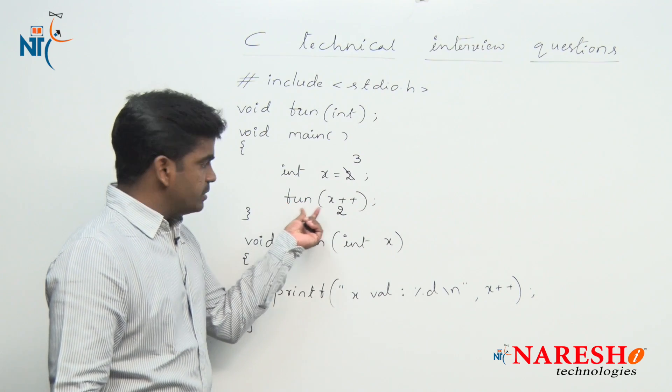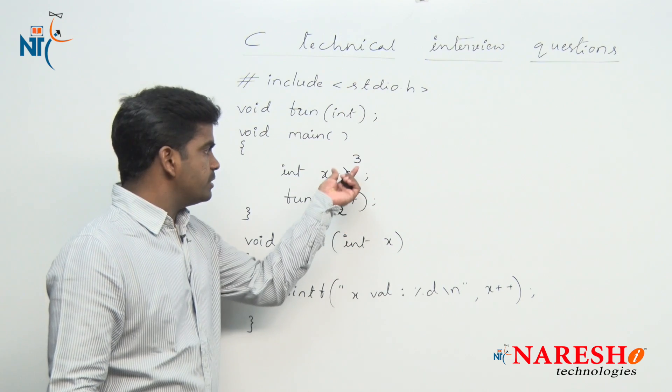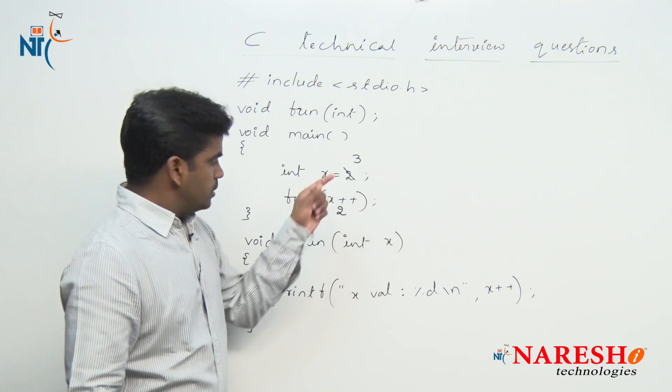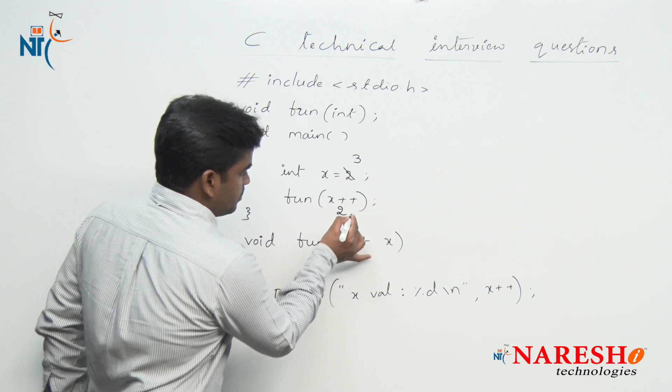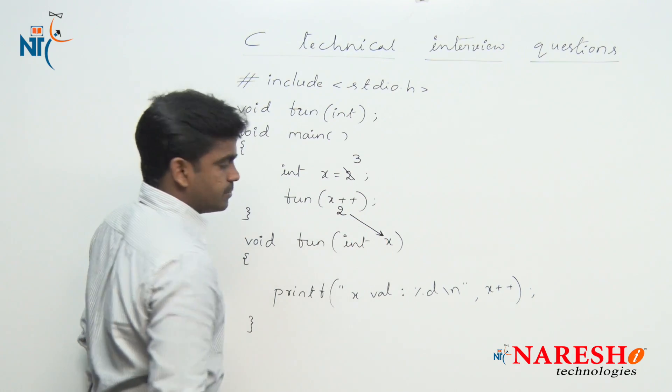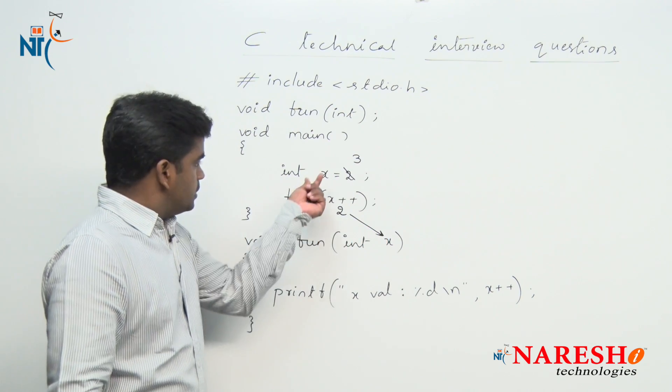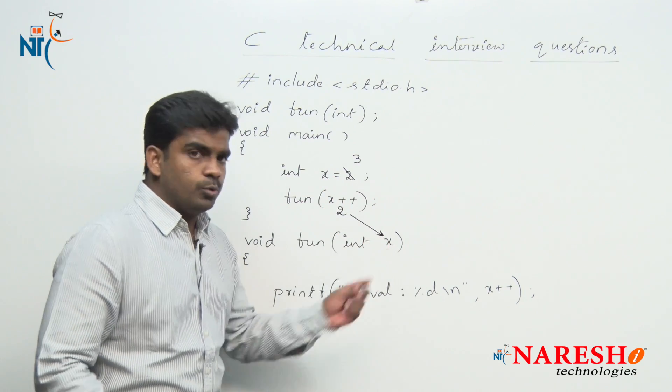But here the function will call with the substituted value only, not with the increased value. So here it will call the fun method and the value 2 will be stored into this x.